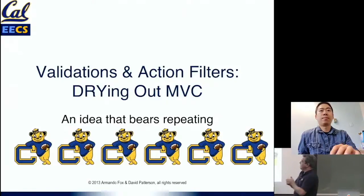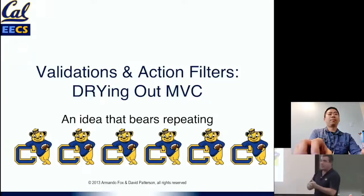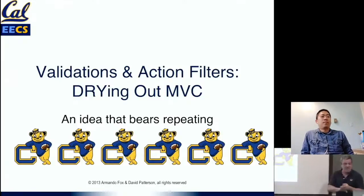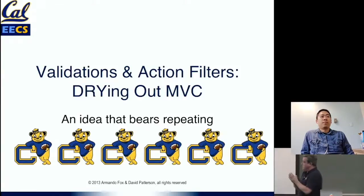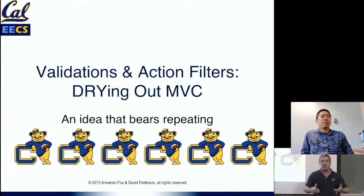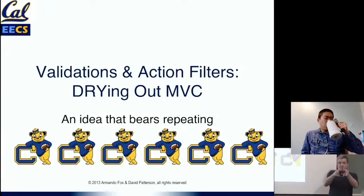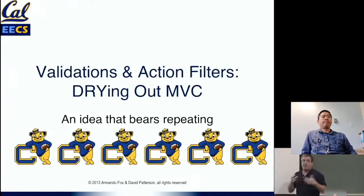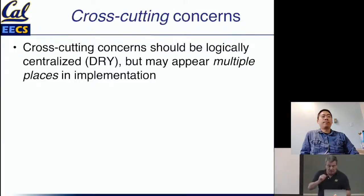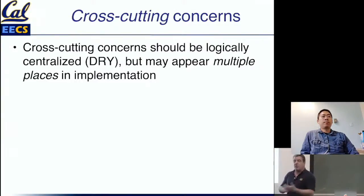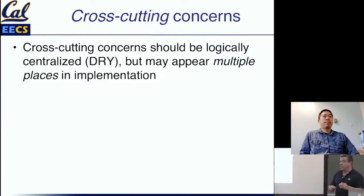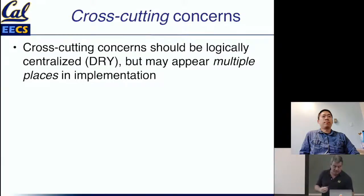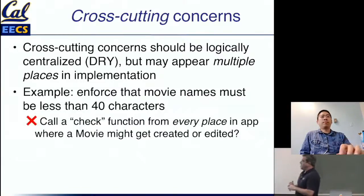Now let's talk about today's main technical topic: validations and filters. A lot of the emphasis in software engineering is reducing repetition and reusing existing code. One challenge is when what you're trying to reuse is not a piece of code in one place, but a cross-cutting concern — something you have to pay attention to at various points in the app. A cross-cutting concern arises at many different points in execution flow, but you still want to avoid duplicating any code or logic related to it.